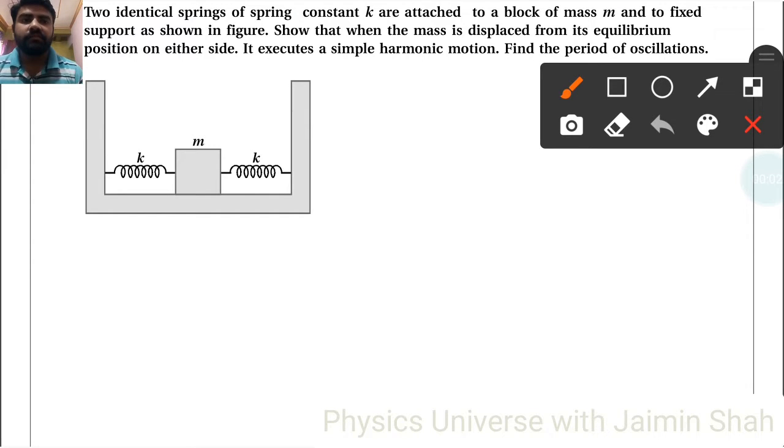Now question is two identical springs of spring constant K attached to a block of mass M and to fixed support as shown in figure. So that when the mass is displaced from its equilibrium position on either side, it executes a simple harmonic motion. Find the period of oscillations.